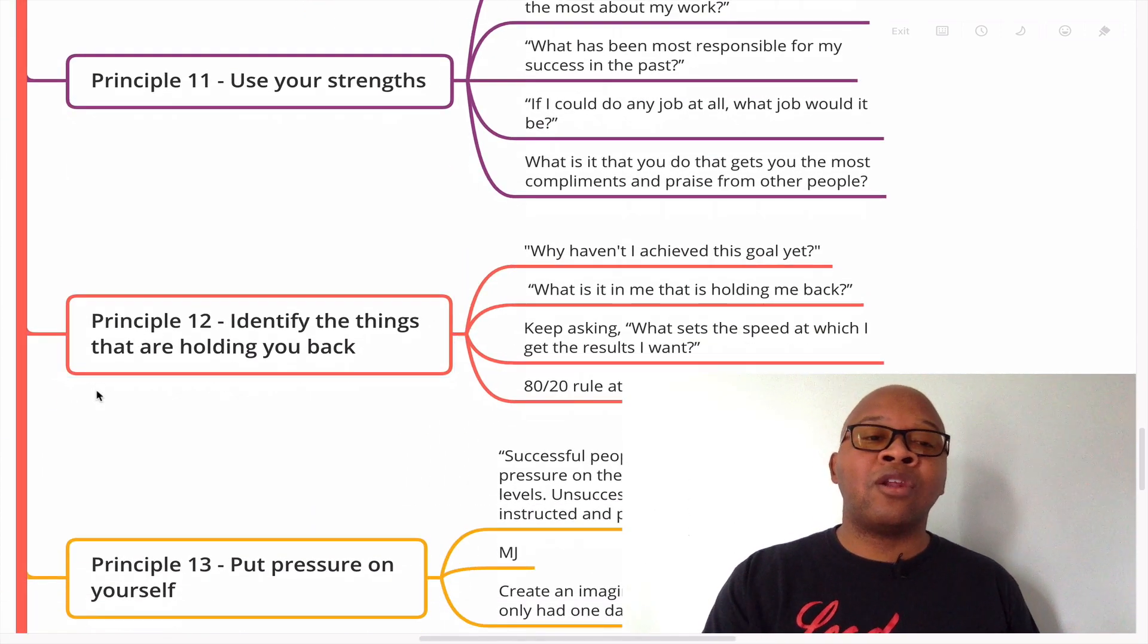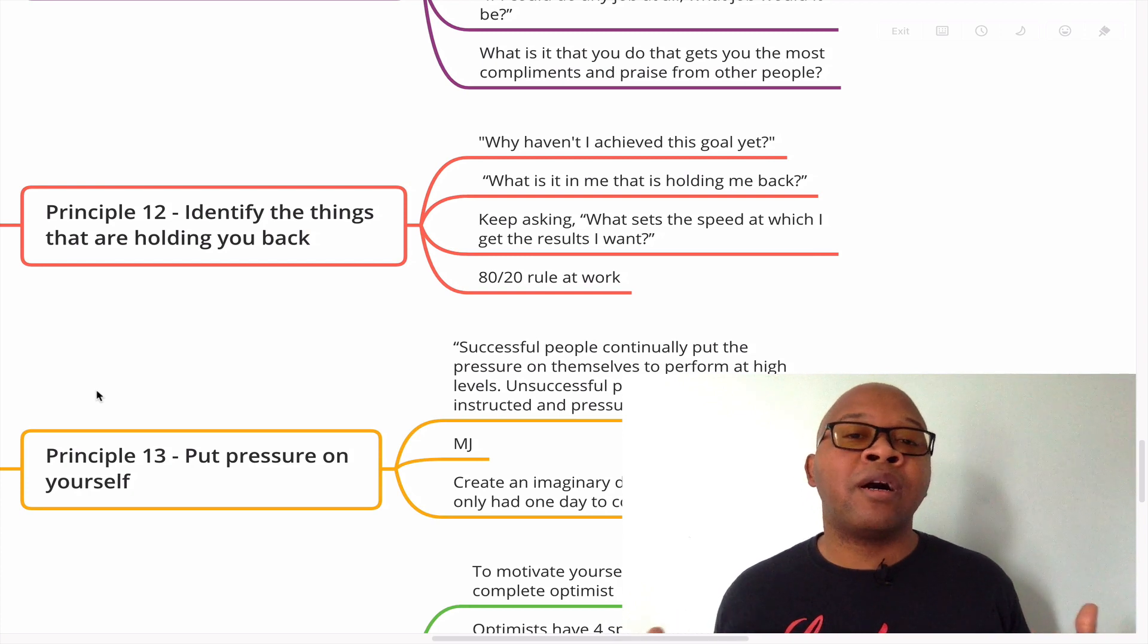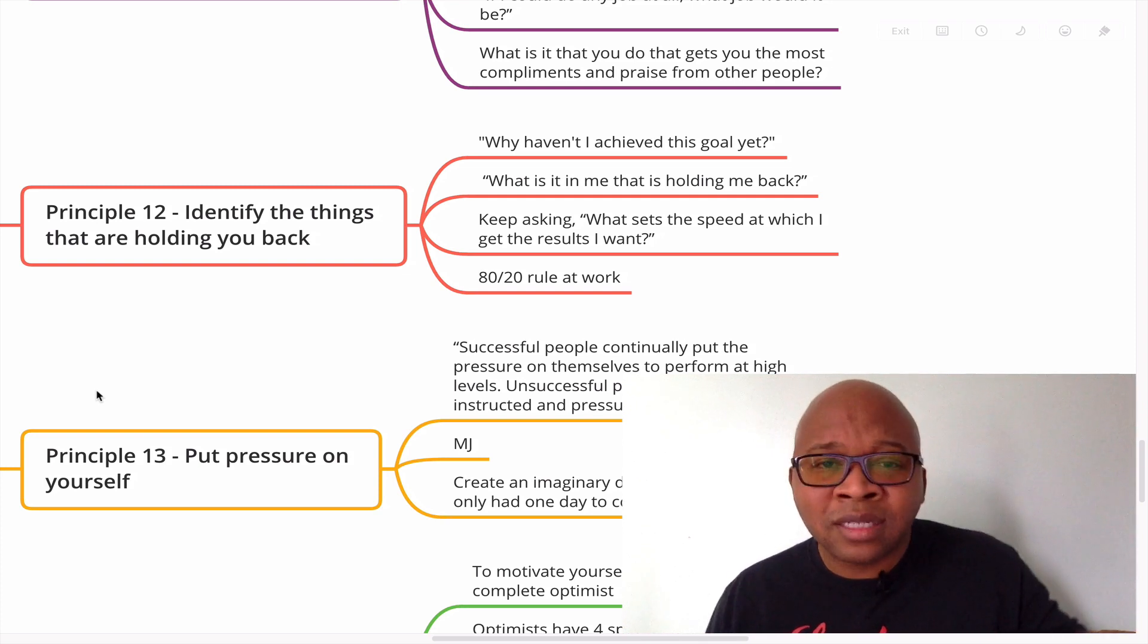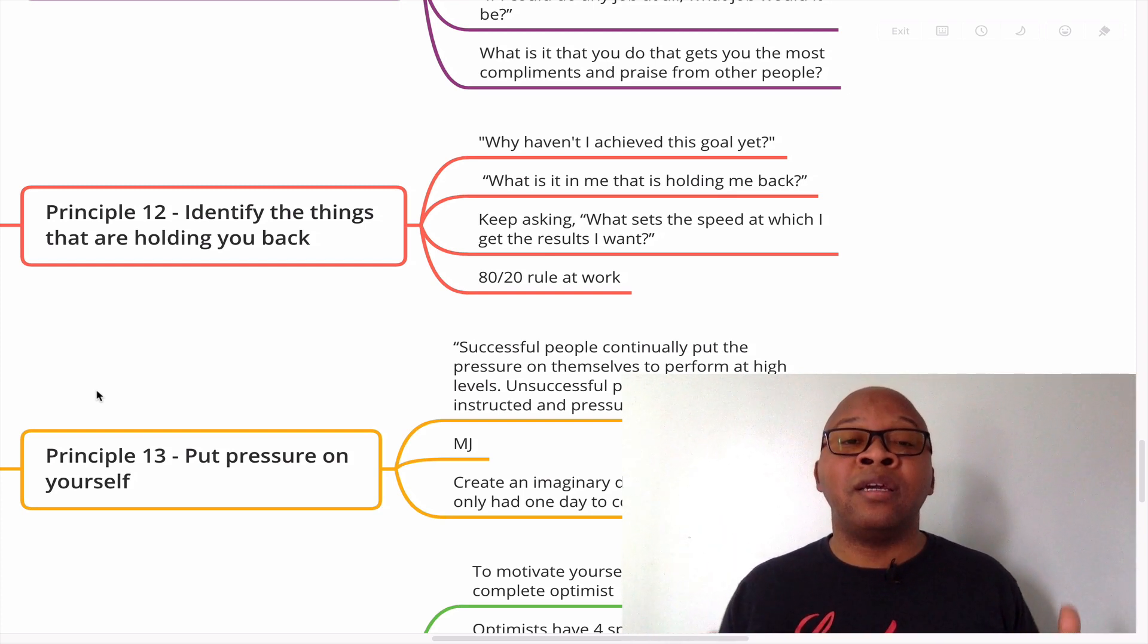And principle number 12 is identifying the things that are holding you back. Now these are bottlenecks. I remember a few years back I was in my car and I was backing out of a parking space. And then I shifted to drive and I'm driving. I pressed on the accelerator, but I noticed that my car wasn't moving. It just moved a little bit, then it stopped. It moved a little bit, then it stopped. And then I pressed on the accelerator some more. And then it just kept doing it. Just moved a little bit, then stopped. Then I looked down and I realized that I had accidentally pressed on the emergency brake. And that was what was holding the car back. That was what was preventing me from accelerating. So that's something we all have. We all have bottlenecks. We have emergency brakes along the way that we have to release, that we have to get rid of in order to accelerate.